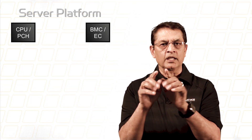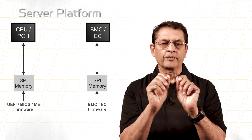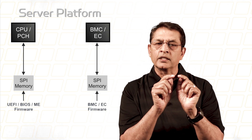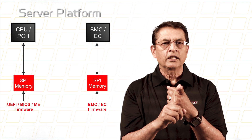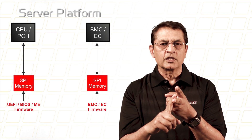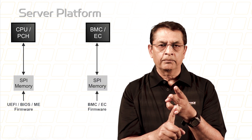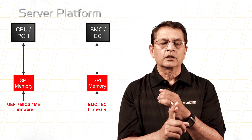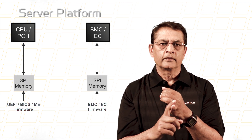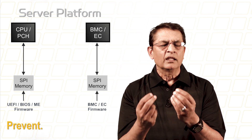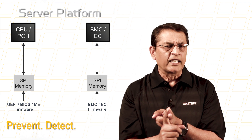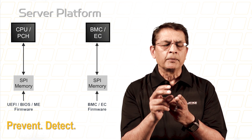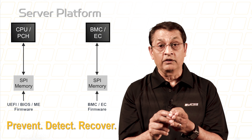In a server, the CPU and BMC each booting from its own spy memories. These spy memories can get infected on a manufacturing line, while the system is in transit, by a system integrator, or through cyber attack. So how can we prevent the infecting of the spy memory? How can we detect the spy memory infection or recover from it?